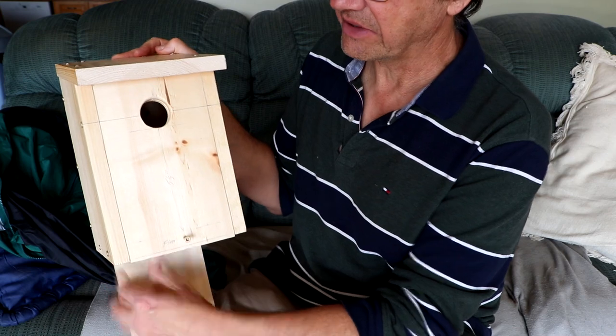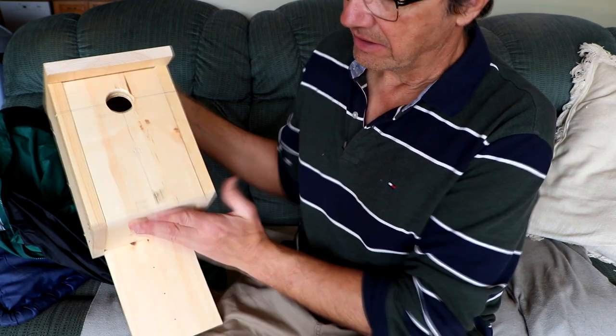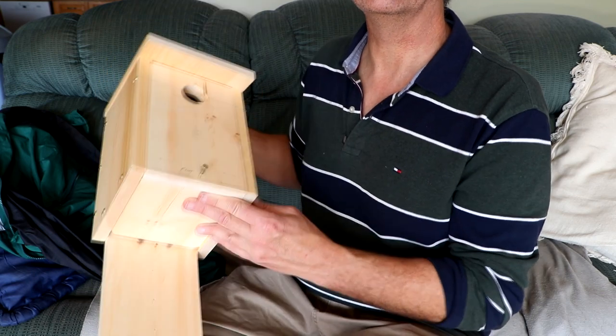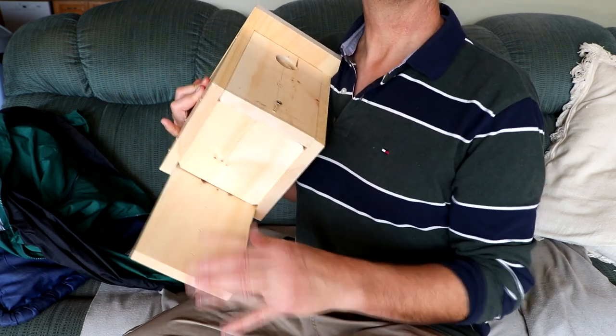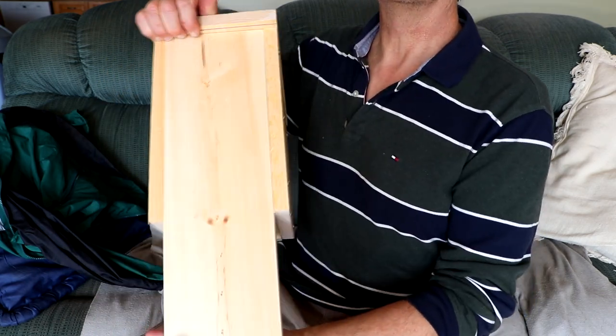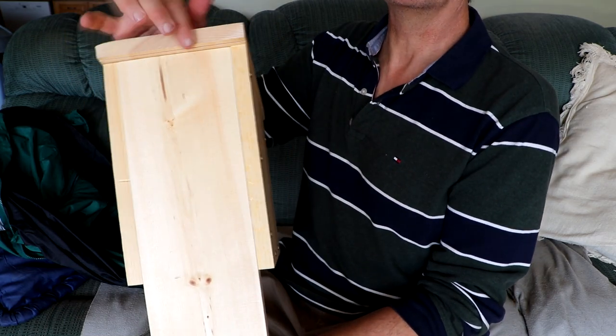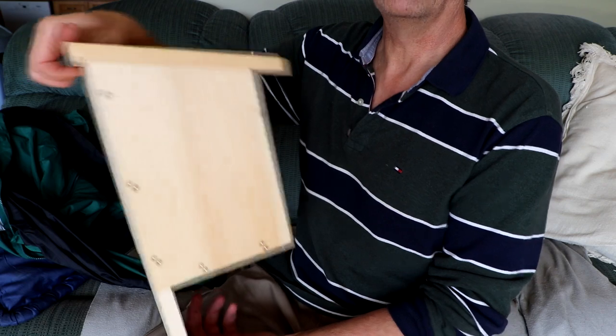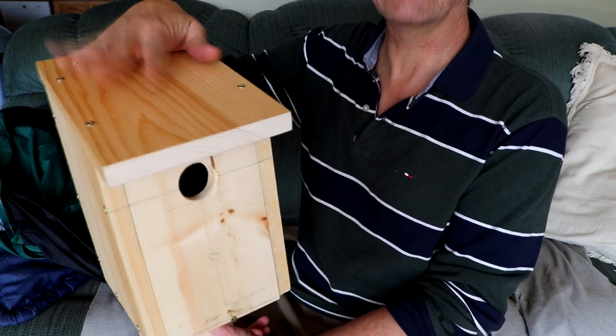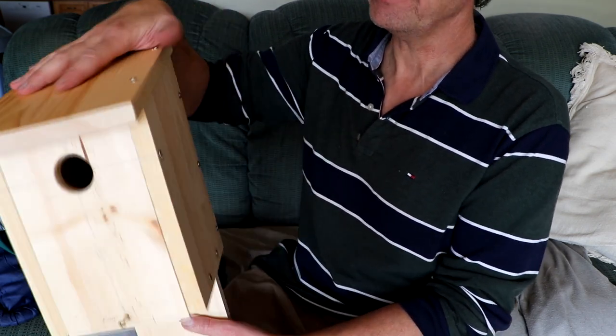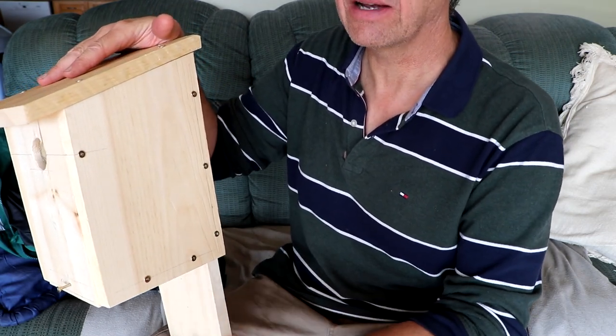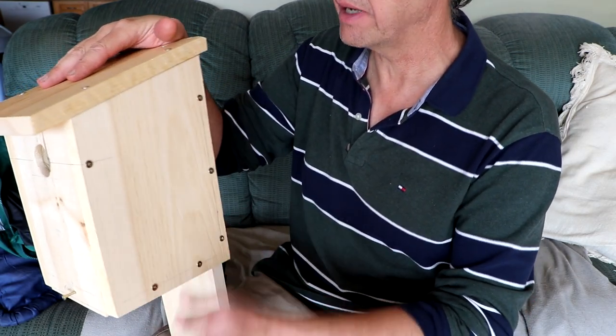This box uses one by six on the front, the bottom, and the back board that you see here. The back board goes right up the back of the box to just under the roof board. The sides and the roof board are made out of one by seven or one by eight pine, which actually measures about one by seven and a half or one by seven and a quarter depending where you get it.